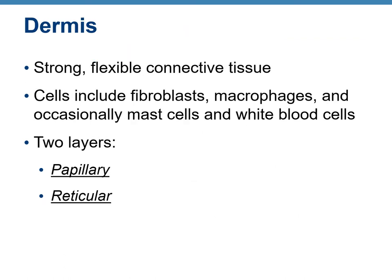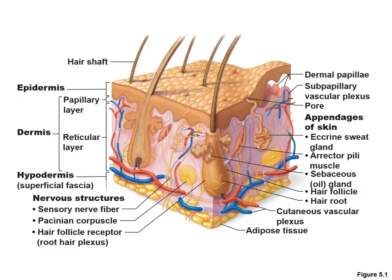Moving deeper, the dermis is connective tissue — strong and flexible. The major cells are fibroblasts, but we also have macrophages, mast cells, and white blood cells. The dermis has two layers: the papillary layer and the reticular layer, as seen in the diagram.